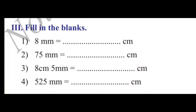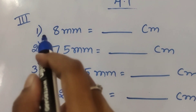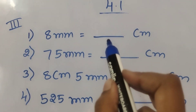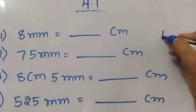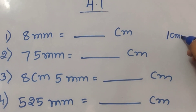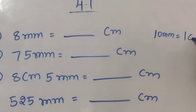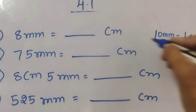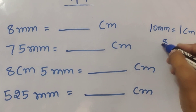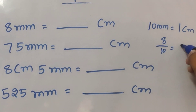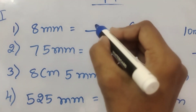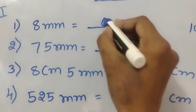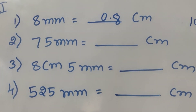Third section: Fill in the blanks. First question: eight mm is equal to how many centimeters? We know that ten millimeters equals one centimeter. So, eight mm = 8 by 10 = 0.8 centimeter.